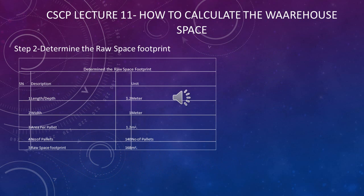Step 2: Determine the raw space footprint. Instead of cubic volume, we now look at floor area only — length times width. The area of a single pallet is 1.2 square meters. With 140 pallets, the raw space footprint is 140 × 1.2 = 168 square meters.